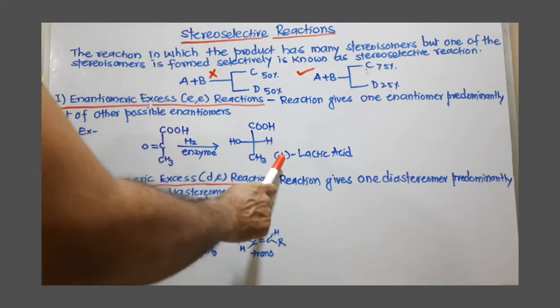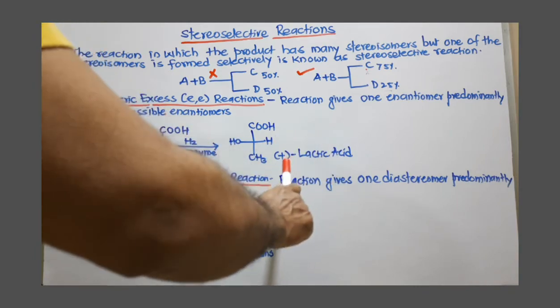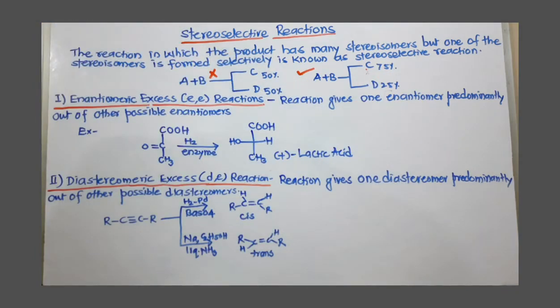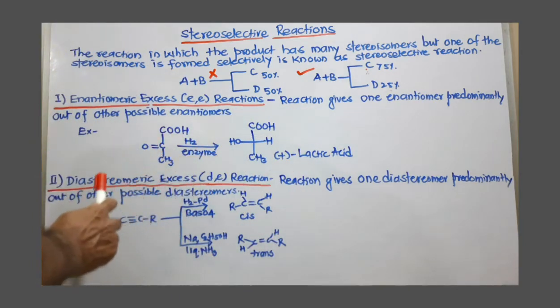This gives only positive lactic acid, D-lactic acid. And another lactic acid is L-lactic acid. Out of these two enantiomers, only one is selected predominantly. Because of this, this is called an enantioselective reaction.